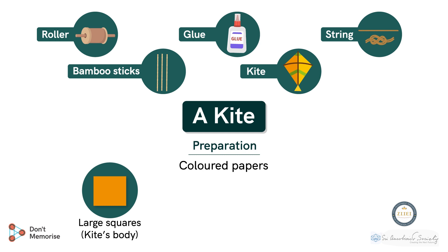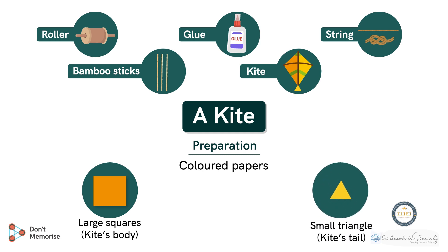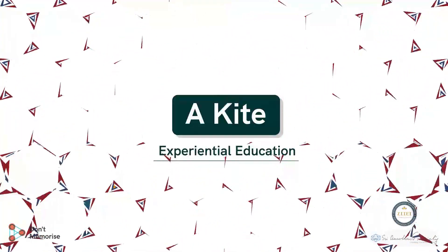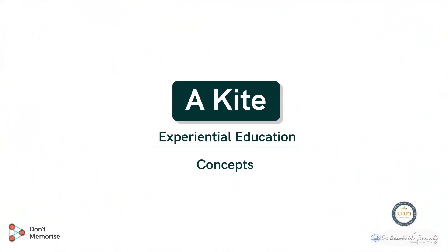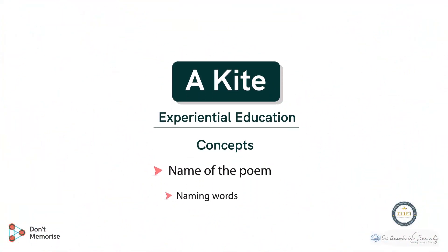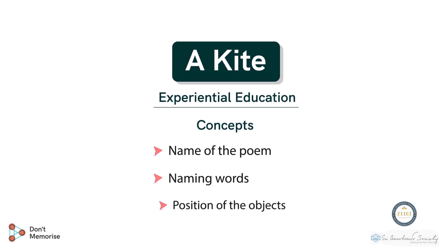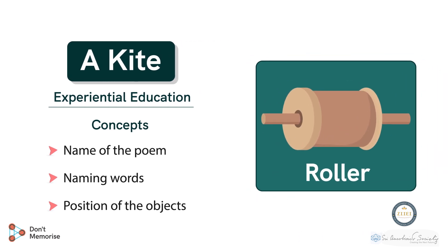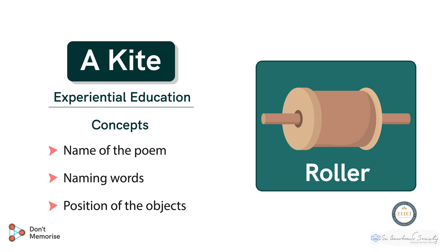We also need smaller triangles for the kite's tail. Now let's begin the session by building concepts such as the name of the poem, naming words, and position of objects. For this we are going to make use of the roller. Our objective here is to get our students acquainted with the idea of experiential education.